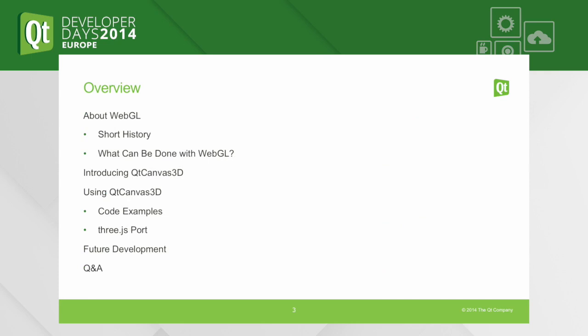Here's an overview. I'm going to first talk about what WebGL is, about the history, and what can be done with it — showing a few demos. Then I'll introduce you to Qt Canvas 3D, which is an implementation of the WebGL API on QML, and show you how to use it in your own code with a few examples. I'll also show the Three.js library port I've done on top of Qt Canvas 3D, and then talk about future development plans.